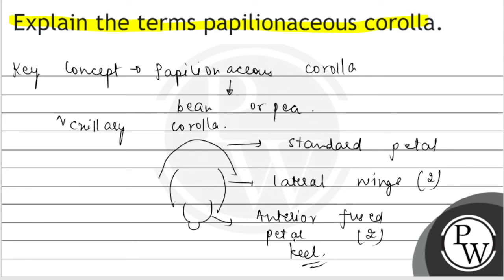So Papilionaceae corolla is in the shape of a BOP example. In this there are five petals — we have discussed about the standard petal and the fused petals in detail. Hope you understood. Best of luck.